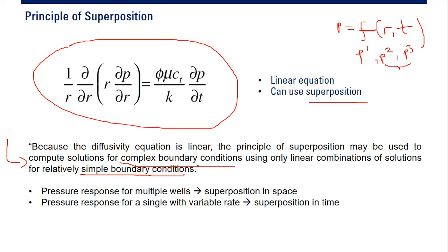From this principle of superposition, especially for pressure transient analysis, we can utilize two methods. The first one is superposition in space, which we will talk about in this video. By using superposition in space, we can calculate pressure response for multiple wells, as opposed to just one well. We can also apply superposition in time, which we will talk about in the next episode — by using that we can analyze pressure response for a single well with variable rate.